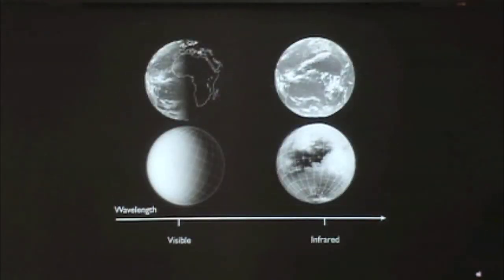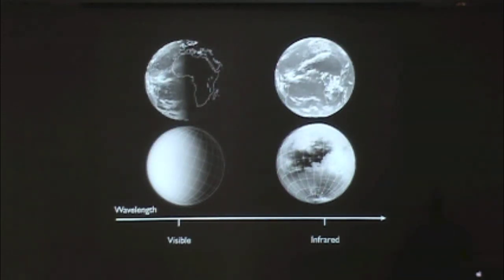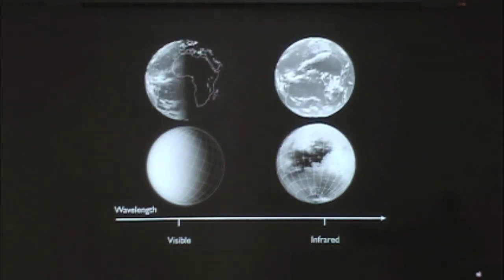We do the exact same thing for Titan. If you look at a visible wavelength image, you just see an orange ball — the haze scatters all the light and you don't see into the atmosphere. But if you use infrared wavelengths, you actually see through the orange ball down to the surface. At different colors, you get different information about the planet, and at Titan we have to use infrared wavelengths to see into the atmosphere.